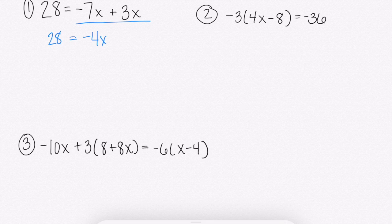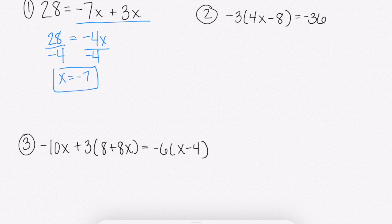So that would get us negative 4x equals 28. And then now it's just a one-step equation. We have negative 4 times x. So to get rid of multiply, we're going to divide both sides by negative 4. And we get x equals negative 7.